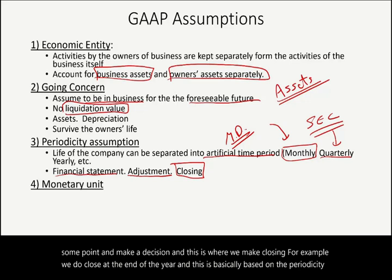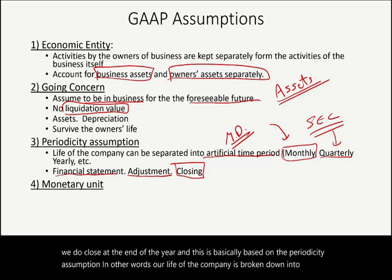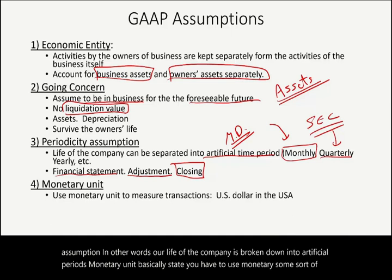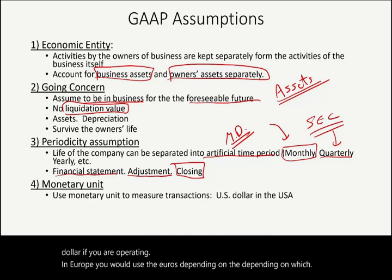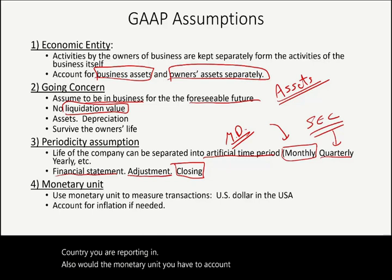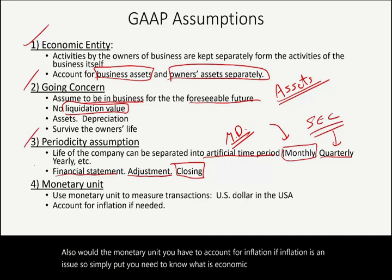The monetary unit assumption states you must use some sort of currency to measure transactions. In the US we use the US dollar; in Europe, the euro depending on the country. Also, with the monetary unit, you have to account for inflation if it is an issue. So to summarize: you need to know economic entity, going concern, periodicity, and monetary unit — these are straightforward CPA questions as long as you understand the concepts.